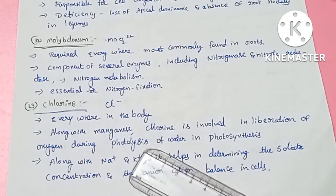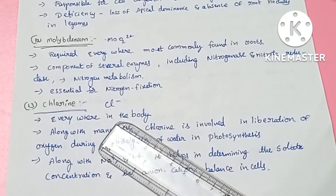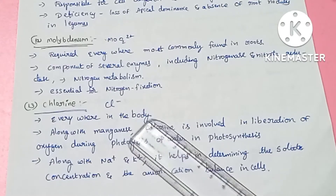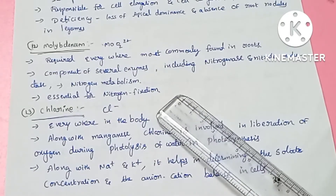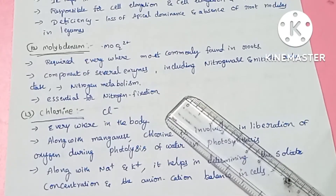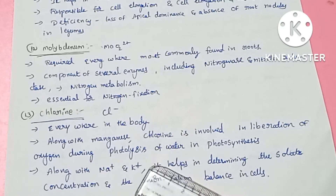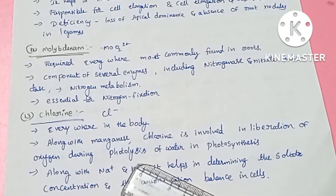The next element is chlorine, absorbed in chloride ion form. It is required everywhere in the plant body. Along with manganese, chlorine ions are involved in the photolysis of water.